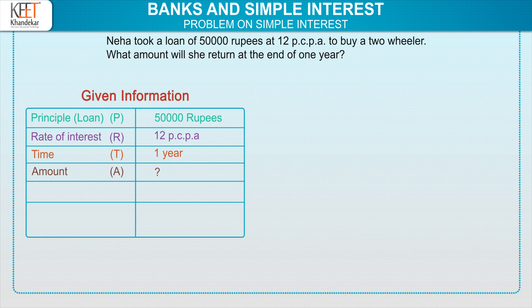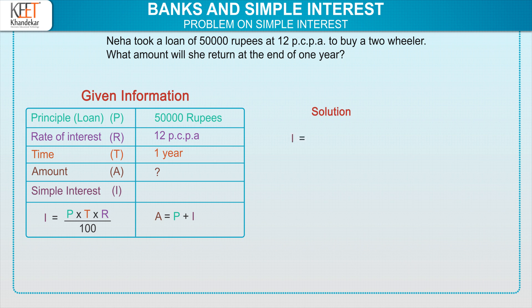Now, the formula for amount is A equals P plus I. But we don't know I, that is interest. Therefore, we will first find the interest by using the formula I equals P into T into R upon 100. So now in the solution part, write the formula of interest: I equals P into T into R upon 100.